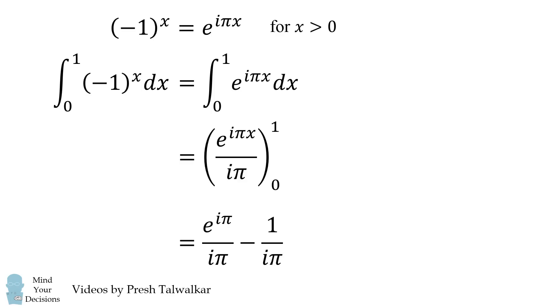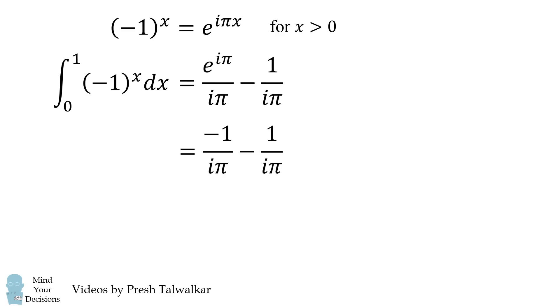So we substitute those in, and now we're going to simplify. e to the i pi is equal to negative 1, and then we combine these fractions. We could then simplify this a little bit more. We multiply the numerator and denominator by i, and since i squared is equal to negative 1, this all simplifies to be 2i all over pi.